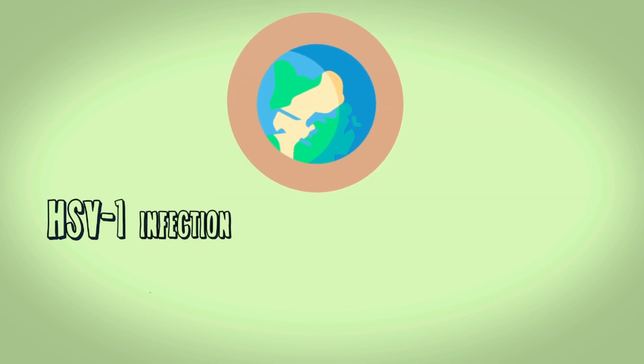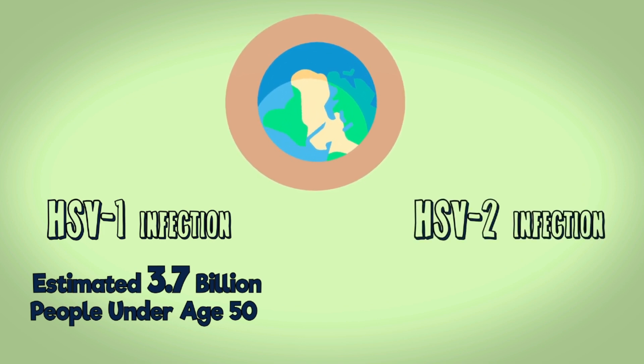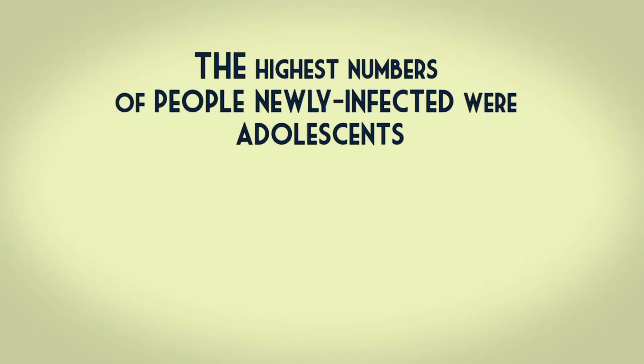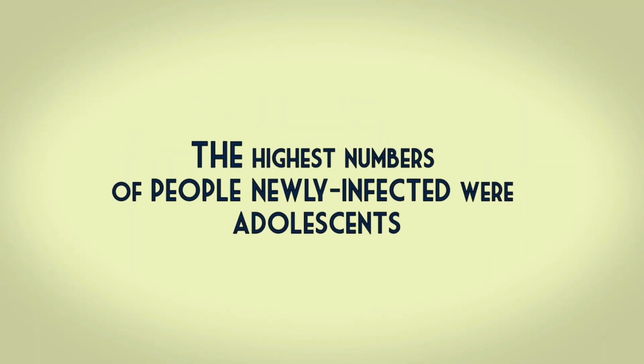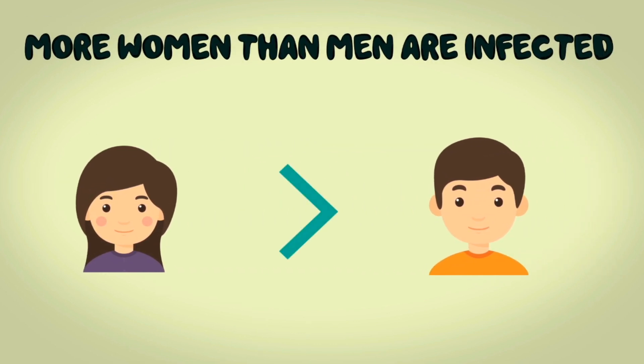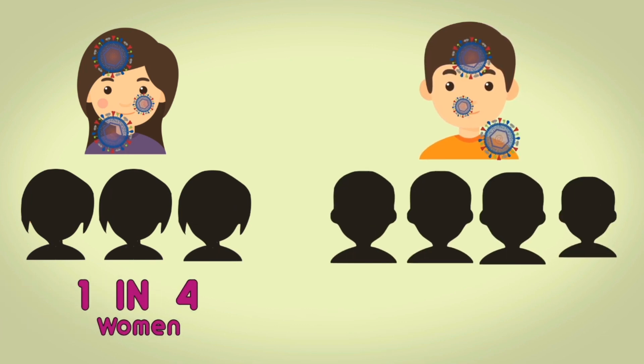According to the World Health Organization, an estimated 3.7 billion people under age 50 have HSV-1 infection globally, and an estimated 470 million people age 15 to 49 for type 2. The highest numbers of people newly infected were adolescents. More women than men are infected, one in four women compared to one in five men.